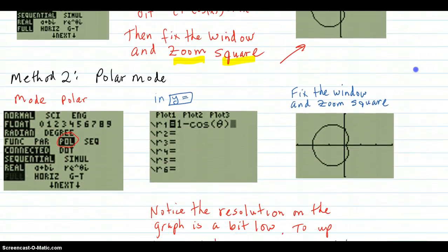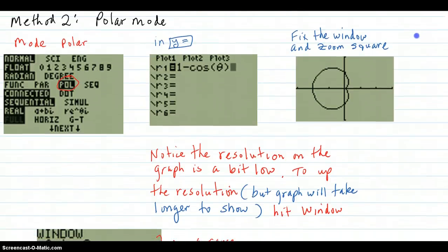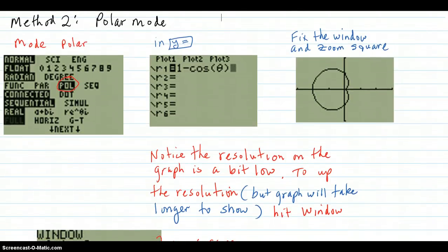Then the polar mode. You go to mode again, but this time you go polar. You put in the r equals one minus cosine theta. Again fix the window. Do the zoom square. And you get the same thing. Notice the resolution on these. It's a little bit jagged as it goes around.